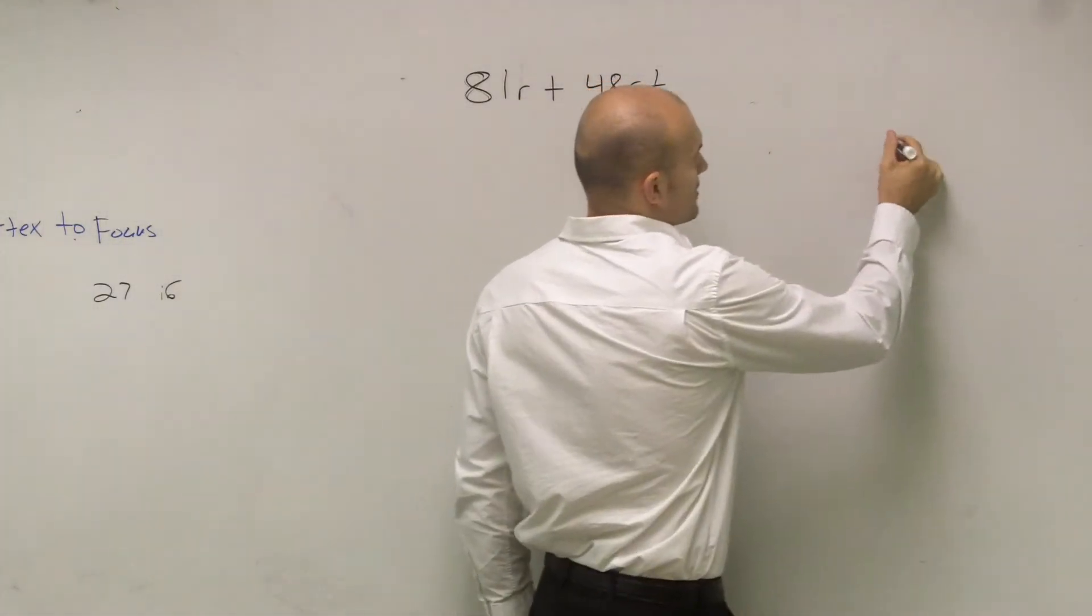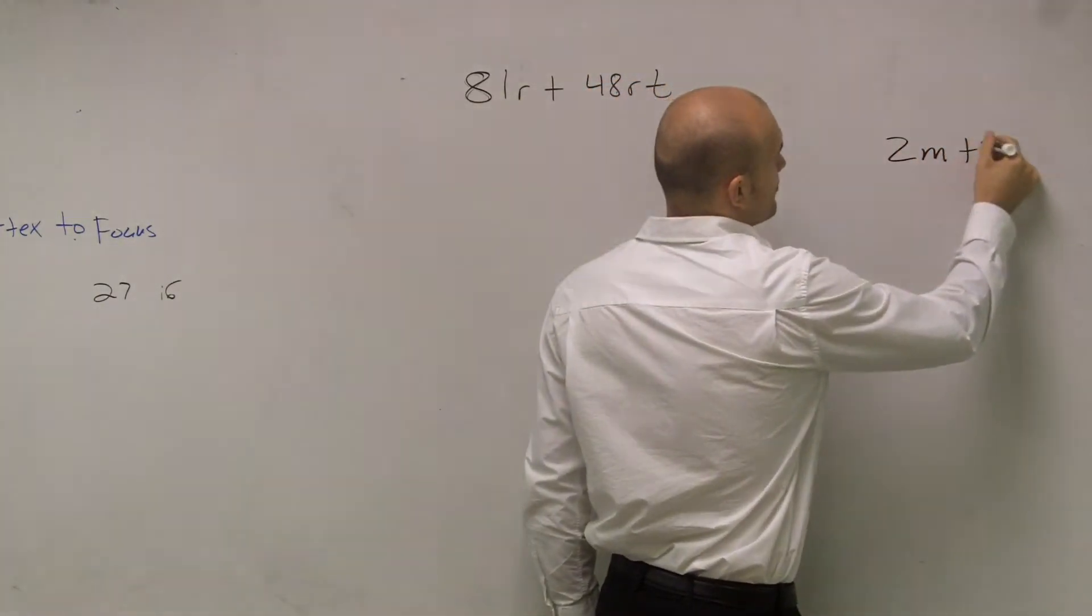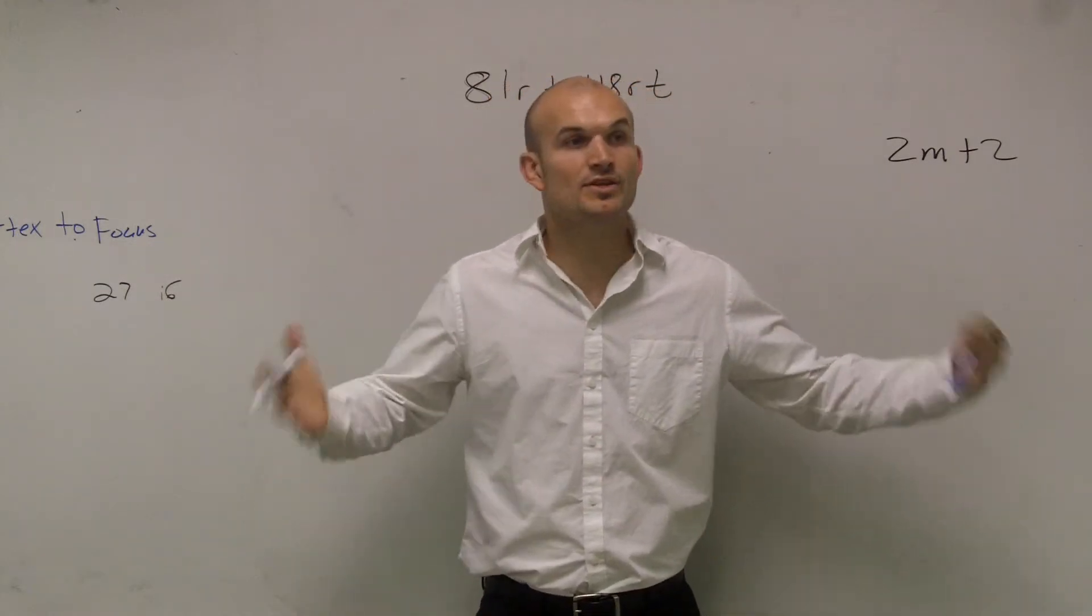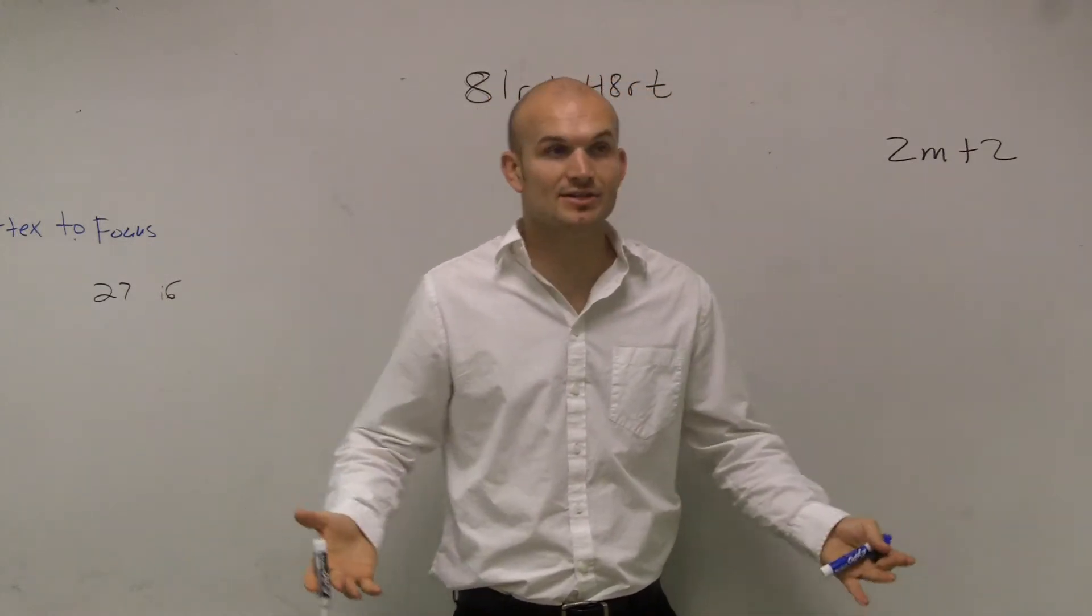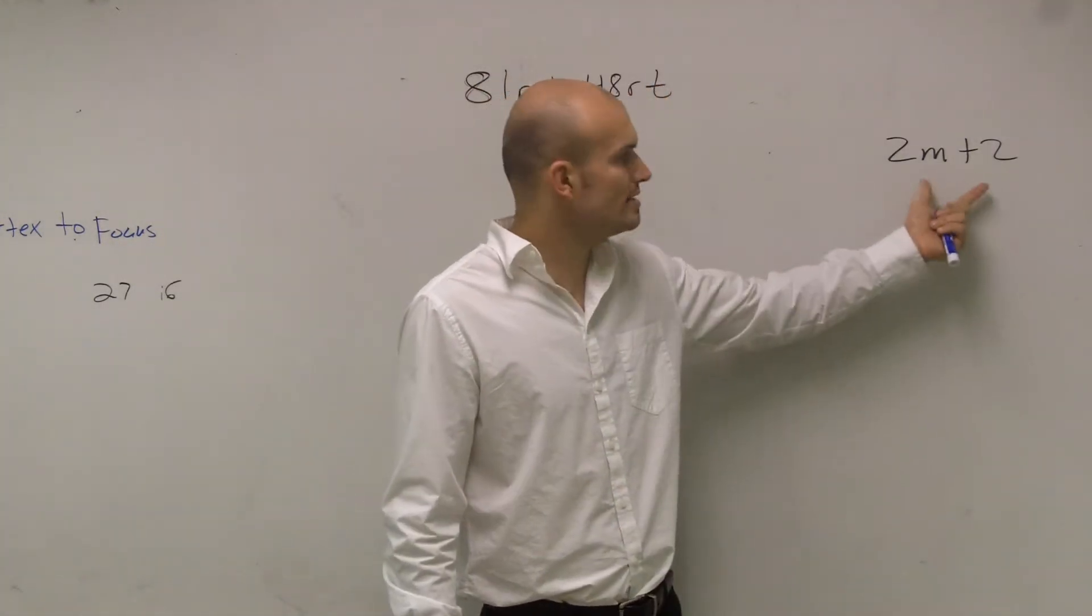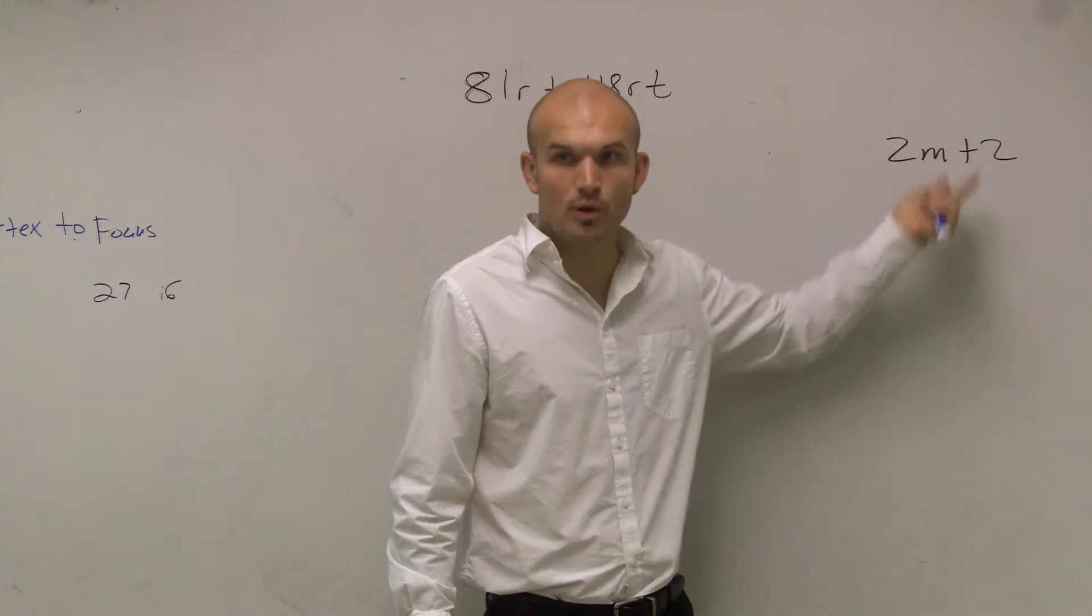So if I look at something simple, like 2m plus 2, I want to rewrite that as a multiplication problem of the numbers of the factors of it. Remember, factors are numbers that evenly divide into your number. So what I can do is think about what number evenly divides into both of these.